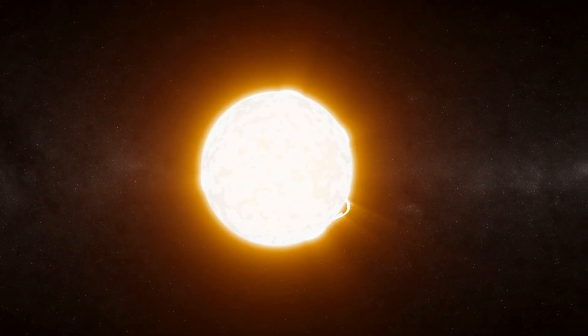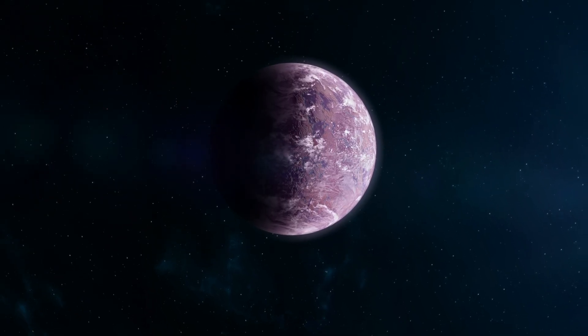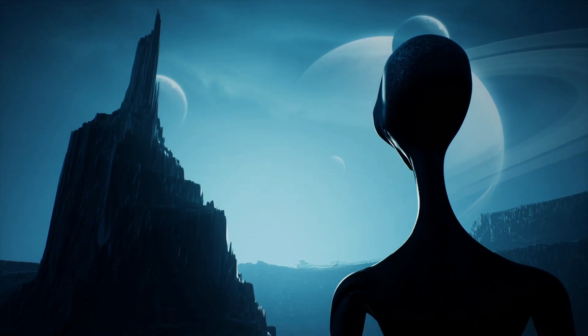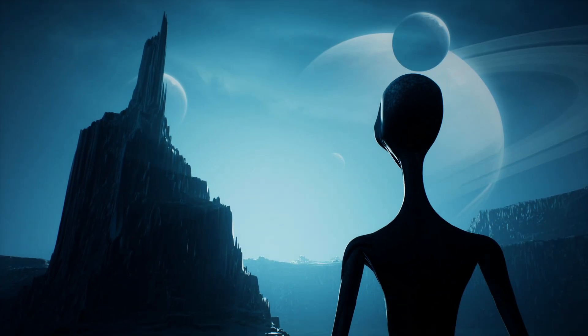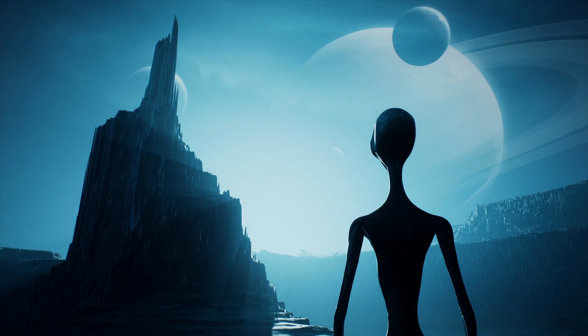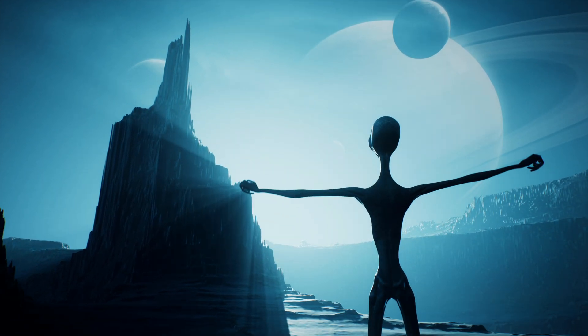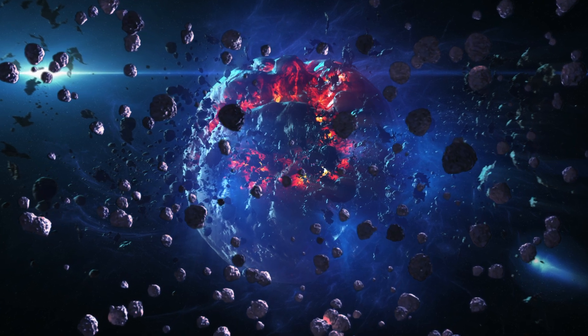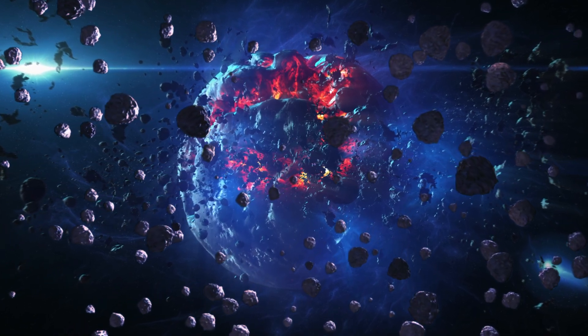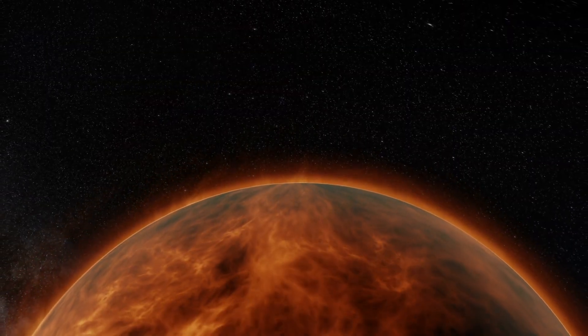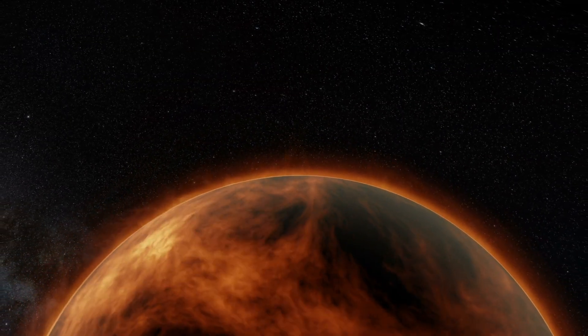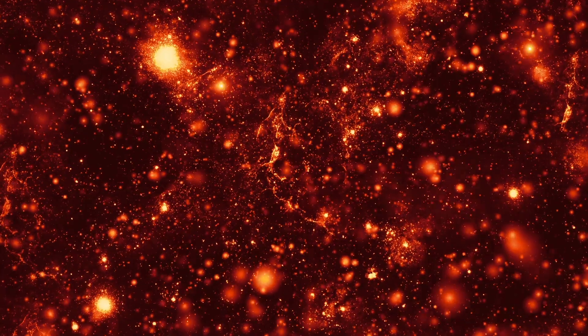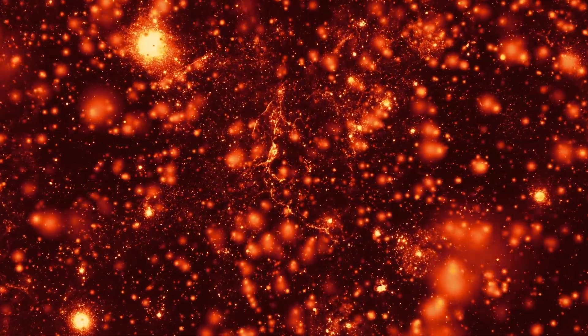The first term is the rate of star formation. The second is the fraction of those stars that have planets. The next is the number of planets in the right place for life to form. Then there's the fraction of those planets where life actually does form, then the fraction that becomes intelligent, then the fraction that builds a civilization, and finally the average lifetime of a civilization. When Frank Drake wrote it down, only one term of the seven was known: the rate of star formation.